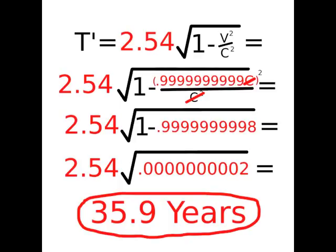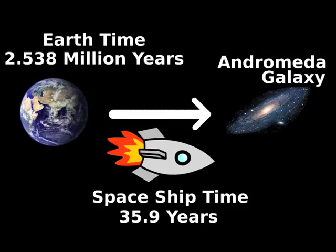Now compare that to the 2.5 million years of Earth time. That means when you return from a round trip, the Earth will be at year 5 million and you will only have aged 72 years, a single lifetime. Some people might call this time travel.